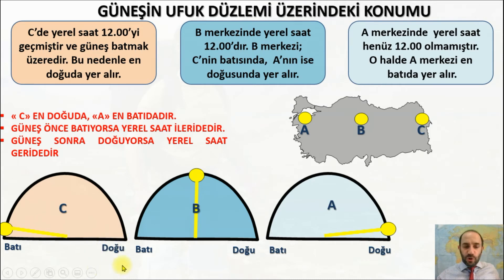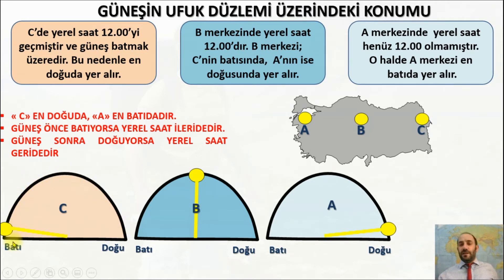Saatin sıralamasına dikkat edin: doğudan batıya doğru 06, 08, 09, 10, 11, 12, 13, 14, 15, 16, 17, 18 şeklinde gider. Güneş doğuda önce doğduğu için önce batar.